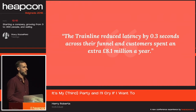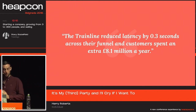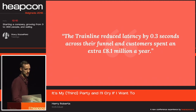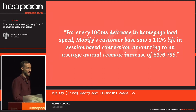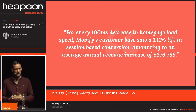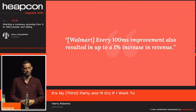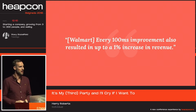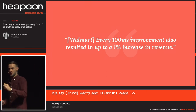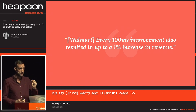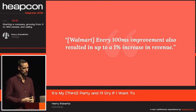Trainline, a client of mine, found that by reducing latency by 300 milliseconds they made an extra 8.1 million pounds every year. Proportionately, that 200 milliseconds is worth 5.4 million pounds to someone like Trainline. Mobify found every 100 millisecond decrease in load time raised them an extra $376,000 a year — so 200 milliseconds is over three-quarters of a million dollars a year. My favourite: Walmart found that for every 100 millisecond improvement, that could lead to a 1% increase in revenue. Walmart is enormous — so 200 milliseconds means a 2% increase in revenue, which is worth $230 million a year to someone like Walmart. That 200 milliseconds doesn't seem so much like zero anymore.